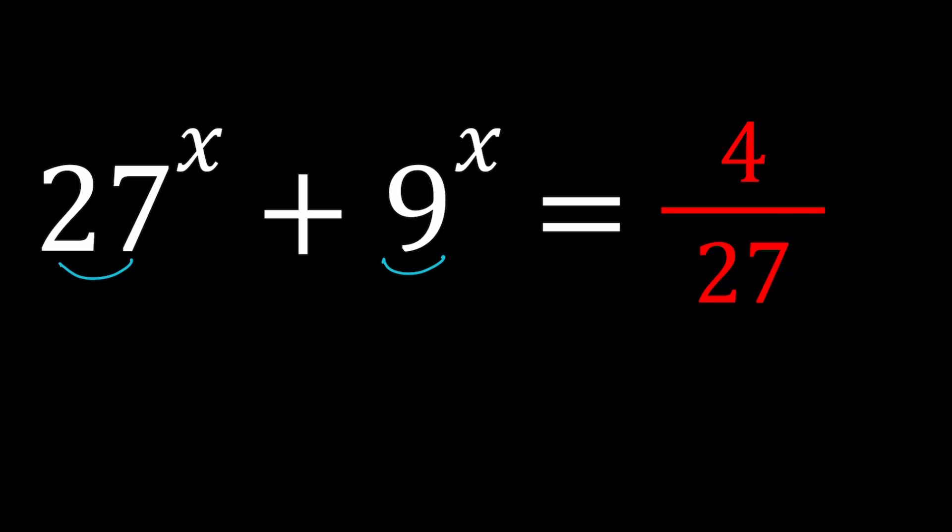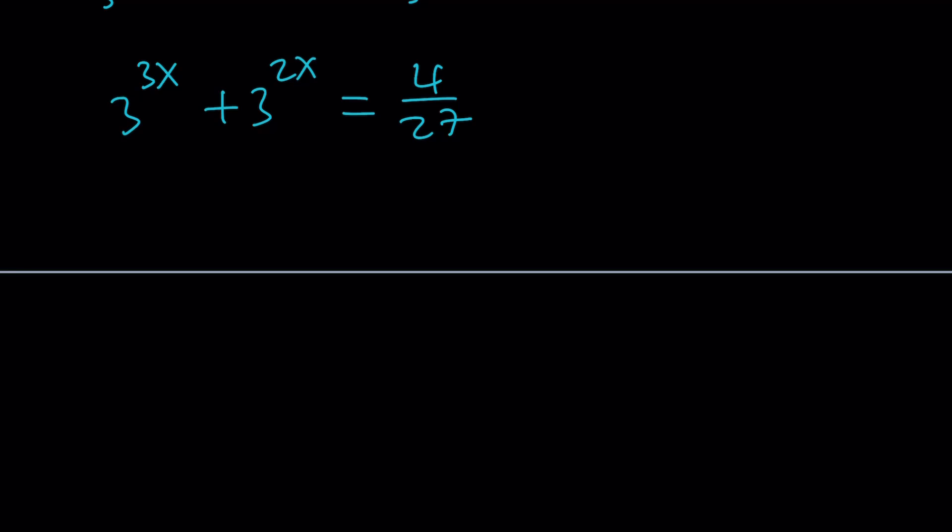So let's go ahead and write the 27 as 3 to the 3rd and 9 as 3 to the 2nd. And this just implies that we have 3 to the power 3x plus 3 to the power 2x equals 4 over 27. I know at this point some people are guessing and finding some solutions. Let's hold on to those, okay?